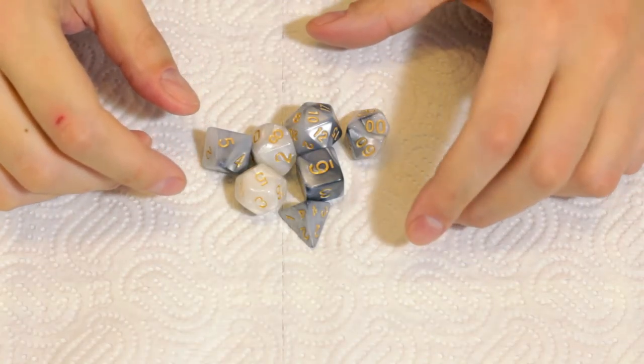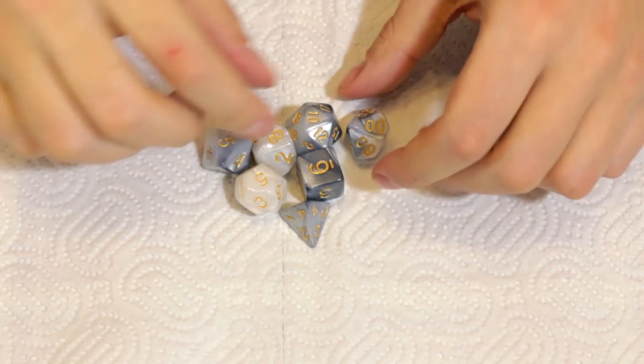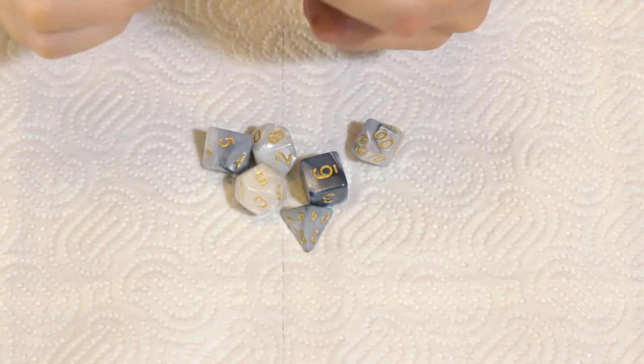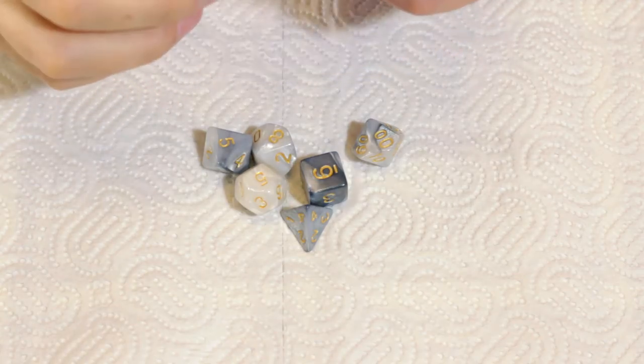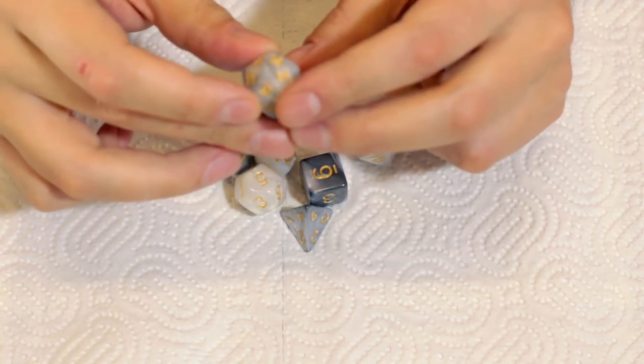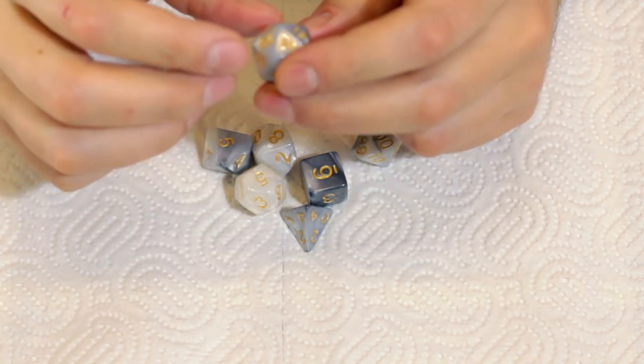Alright guys, so I decided to go along with these white and gray dice that I got just recently. And what I'm going to do is customize them. In what way?